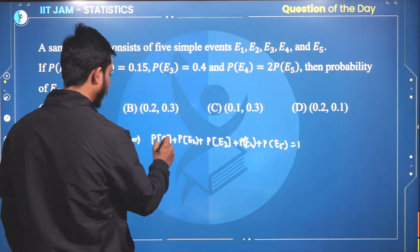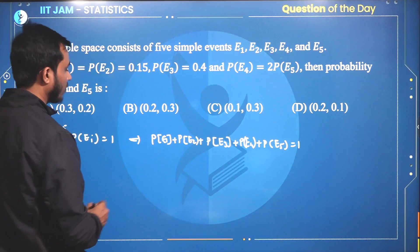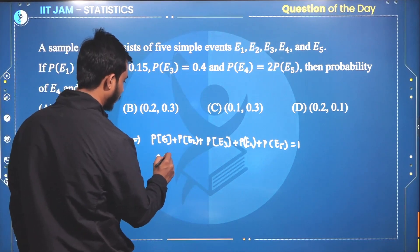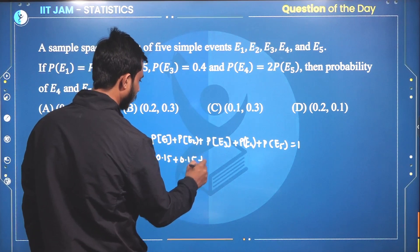Let us substitute the values. Probability of E1 and E2, the value is 0.15, 0.15.